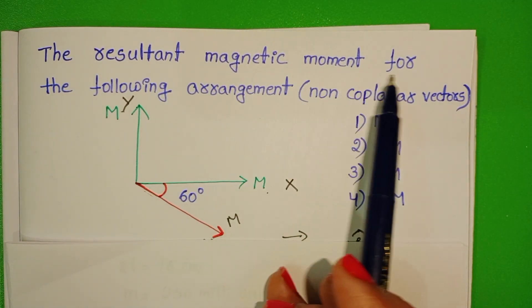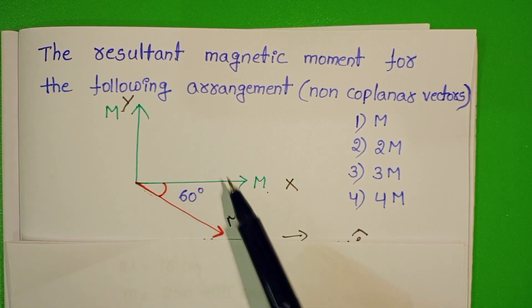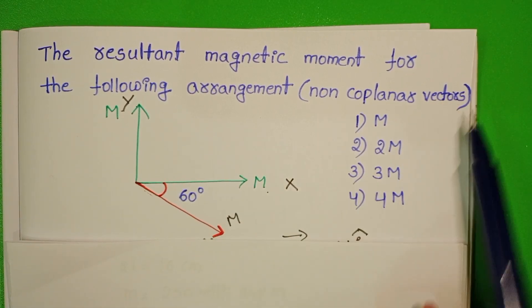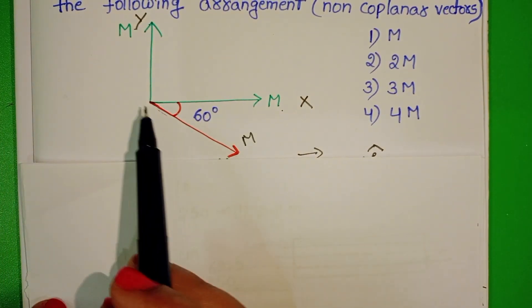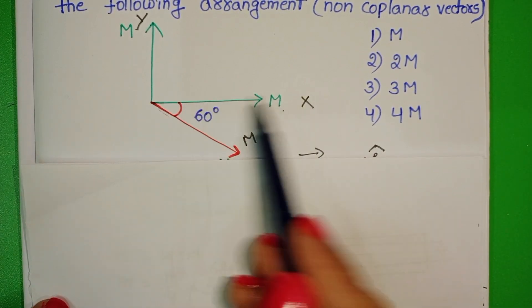The resultant magnetic moment for the following arrangement and these three non-coplanar vectors. Magnetic moment of the first vector is along the x direction.